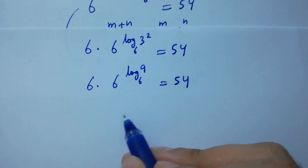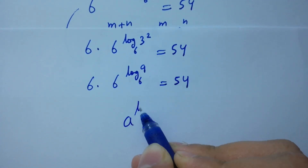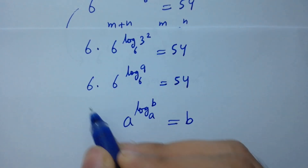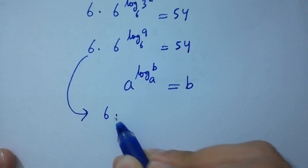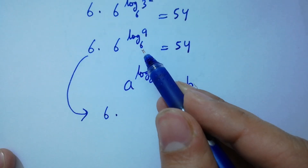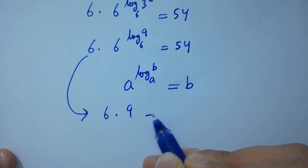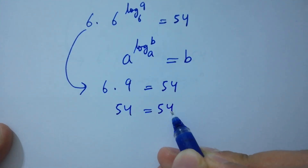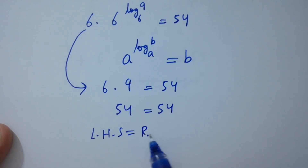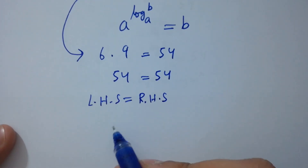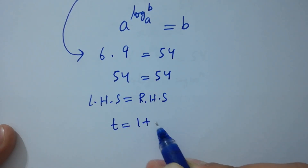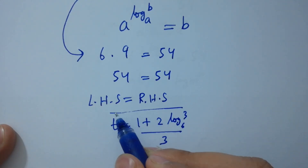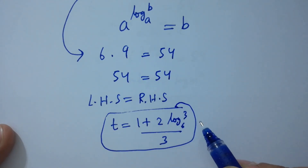Using a to the power log b to the base a equals b, we get 6 times 6 to the power log 9 to the base 6 equals 54, which gives 6 times 9 equals 54. Left hand side equals right hand side, which confirms that t equals (1 plus 2 log 3 to the base 6) over 3 satisfies the equation.